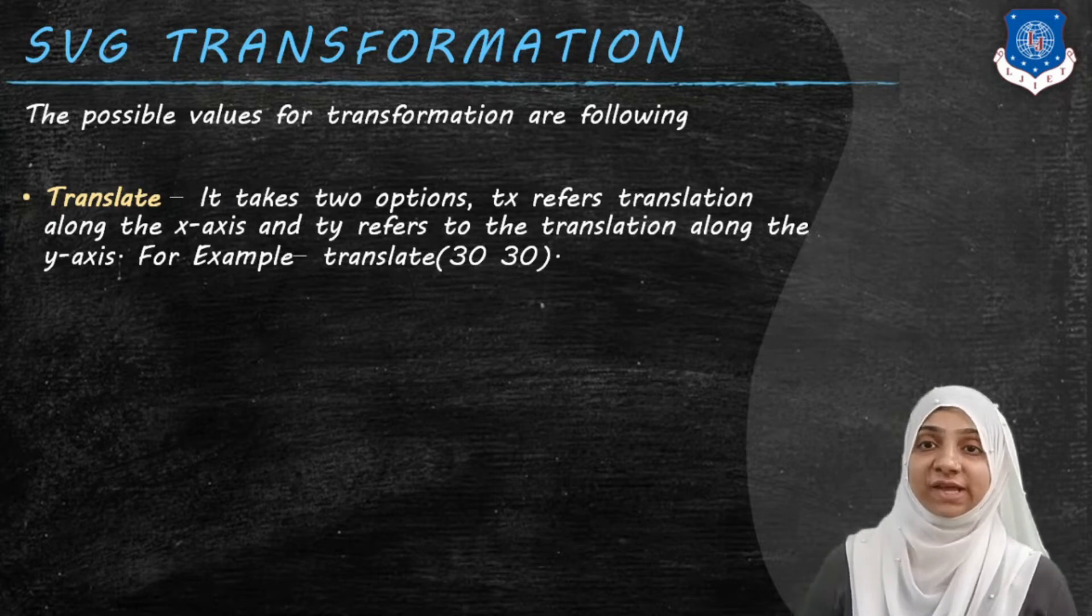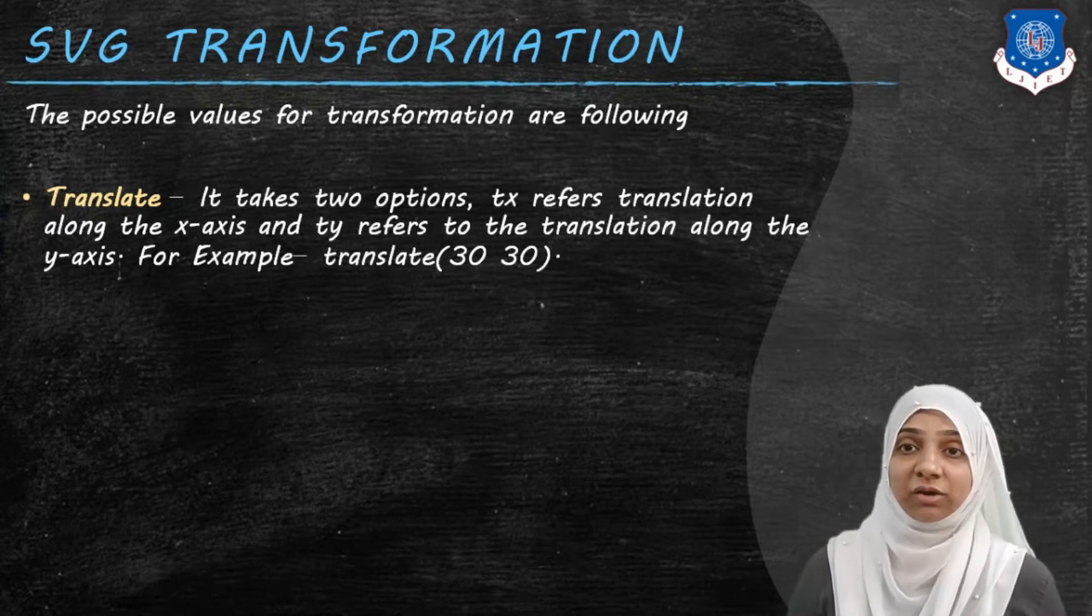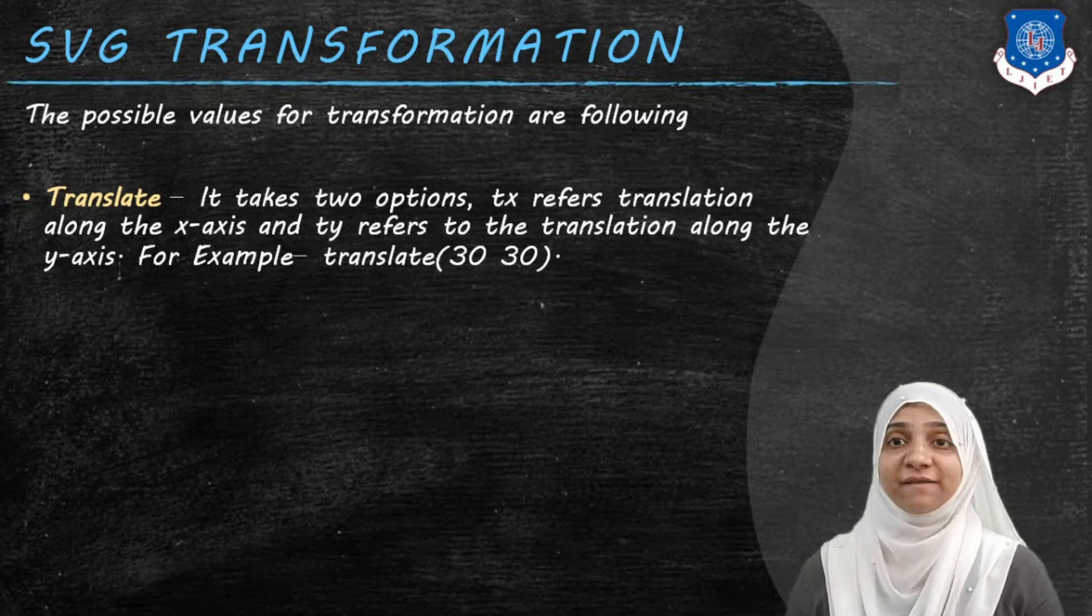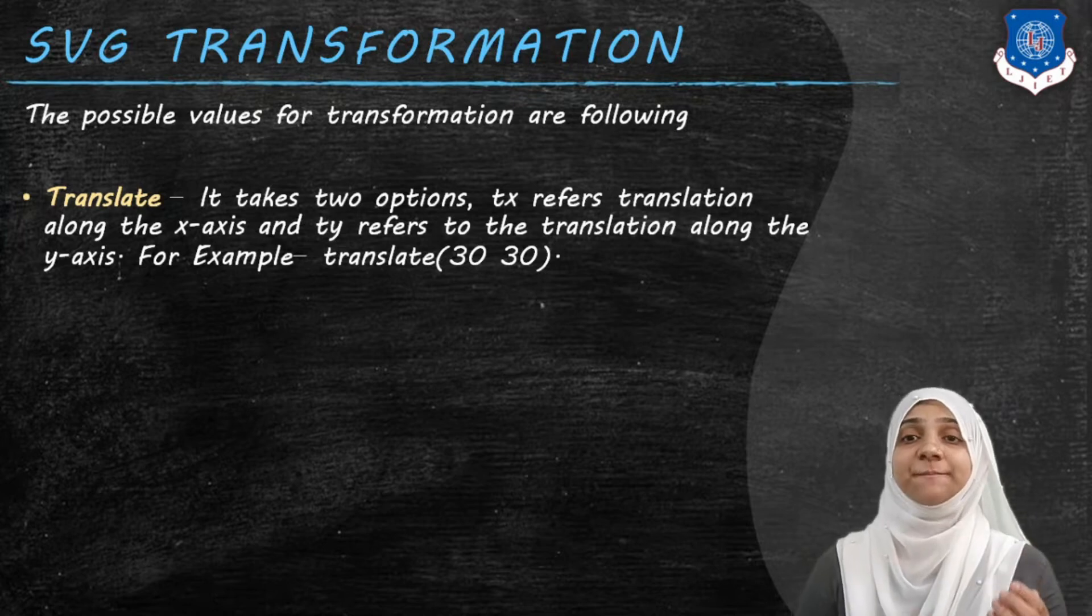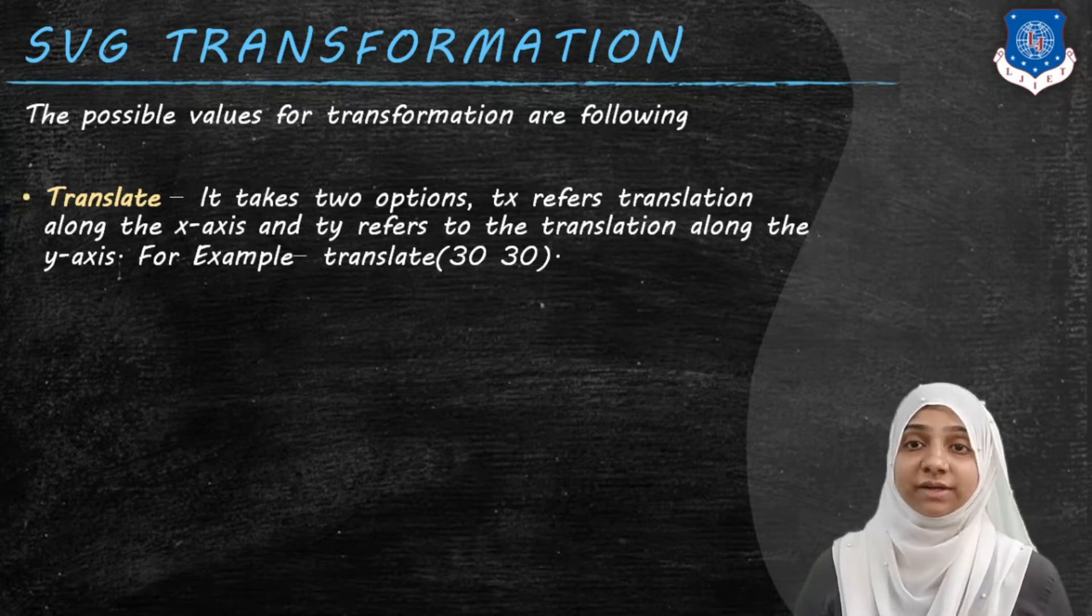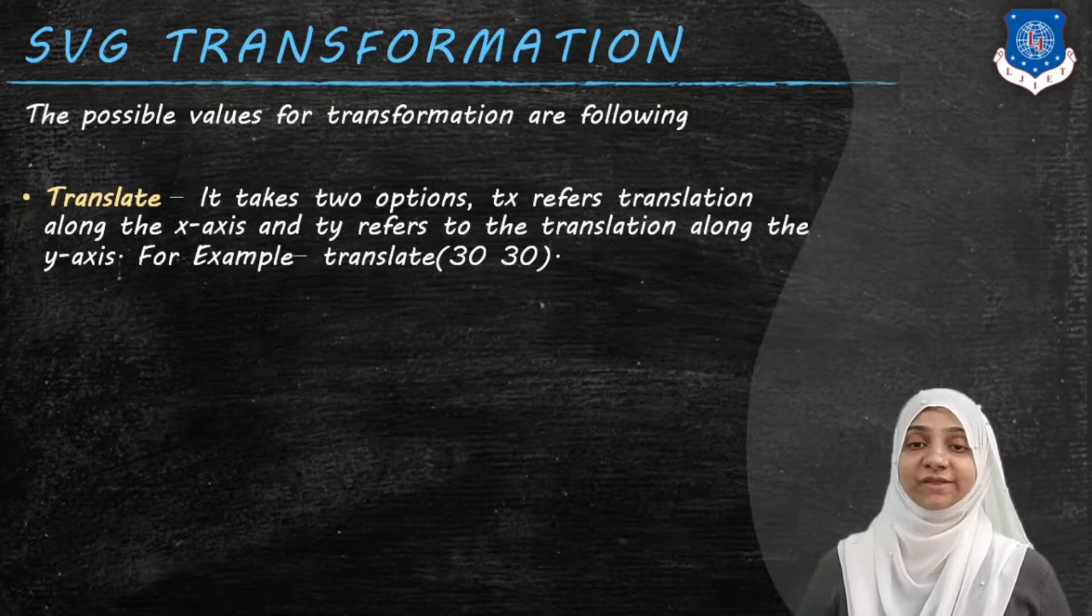For example, when I translate some object or some group or an element 30, 30, I am shifting that element 30 pixels from the left towards the right and 30 pixels down from the top. So all complete elements will be mapped from its original position to new coordinate, that is at 30, 30. Let us look into an example of this.